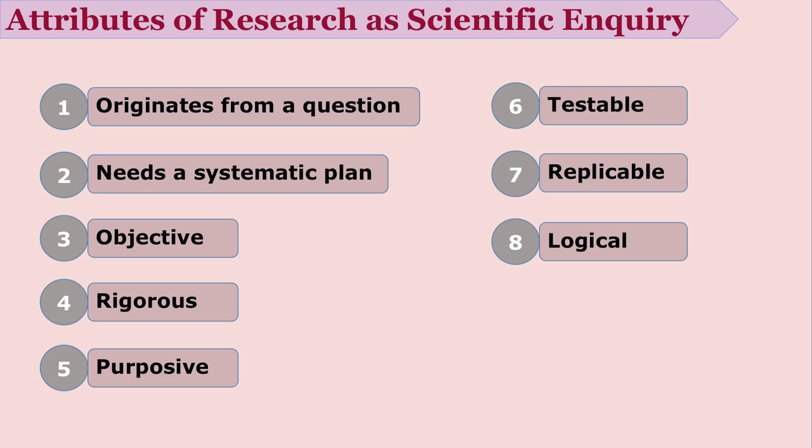Research is a replicable process. Suppose I have conducted a certain research in one city of a state — another person has the equal opportunity to completely replicate the study in another state or city of the country. This gives scope for seeing how sociocultural factors affect the findings. It is the responsibility of a researcher to provide sufficient details about the study so as to enable another person to conduct the study in replication.